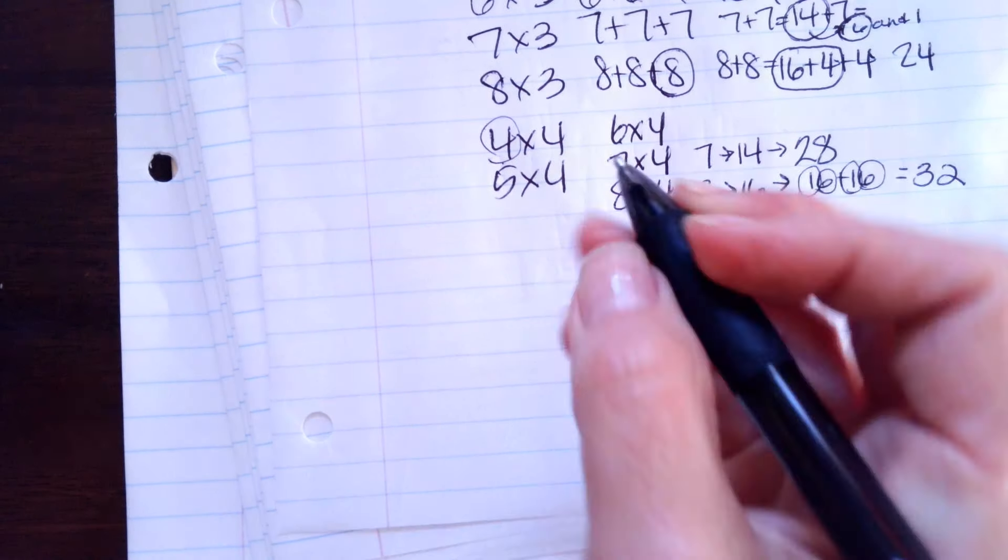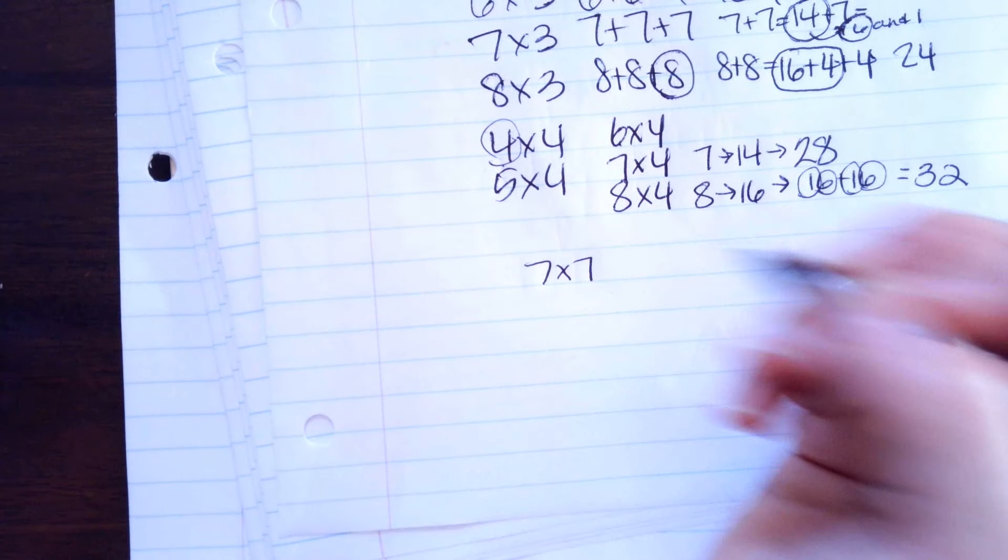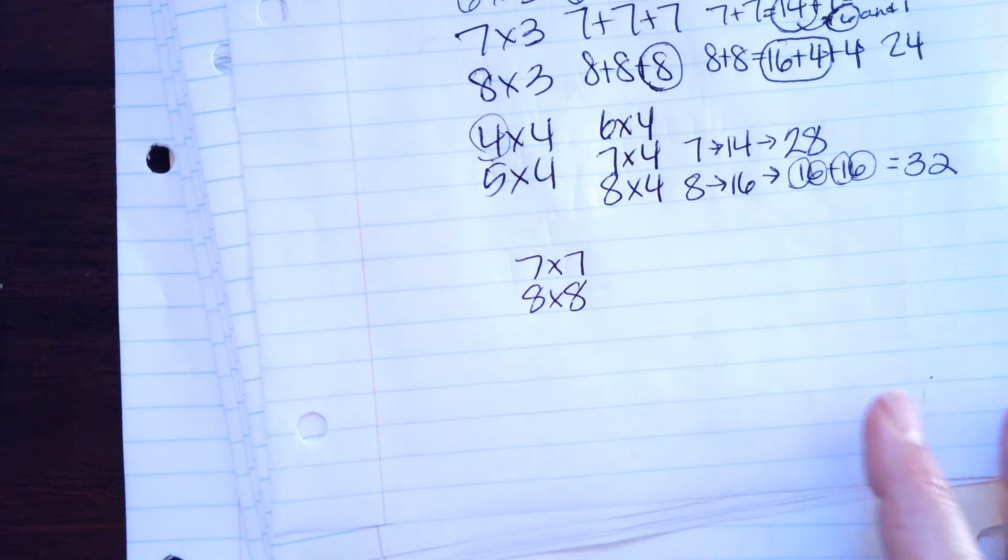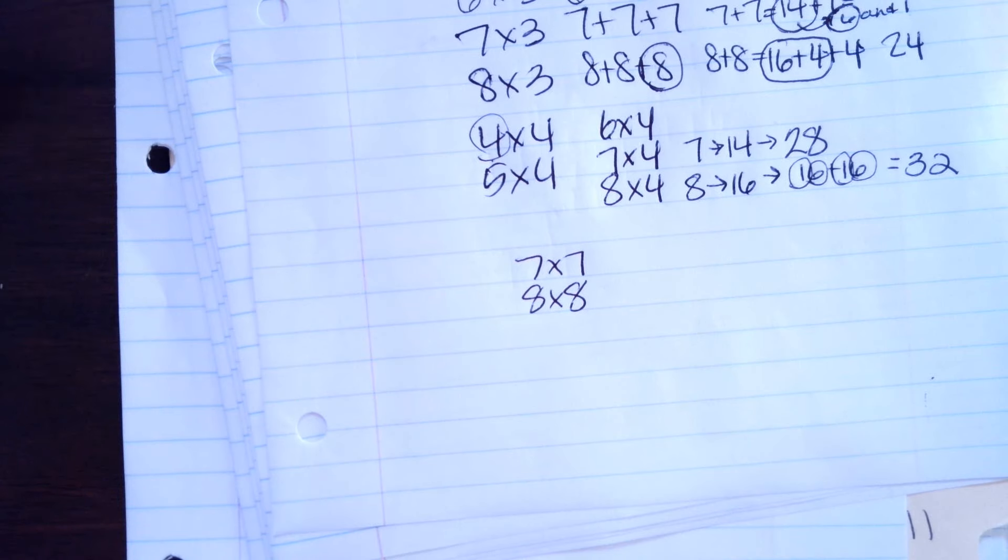And then 7 times 7 is our football team, 49ers. 8 times 8, we're going to remember I ate and I ate and I fell on the floor. 8 times 8 is 64.